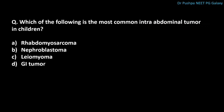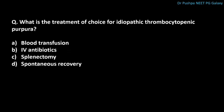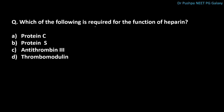What is the most common intra-abdominal tumor in children? The correct answer is nephroblastoma, also known as Wilms tumor. What is the treatment of choice for idiopathic thrombocytopenic purpura? The correct answer is splenectomy. Which of the following is required for the function of heparin? The correct answer is antithrombin-3.